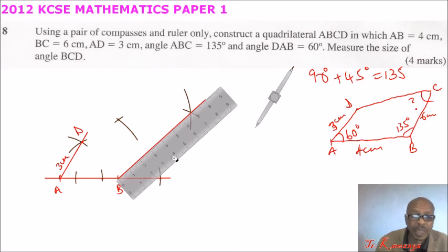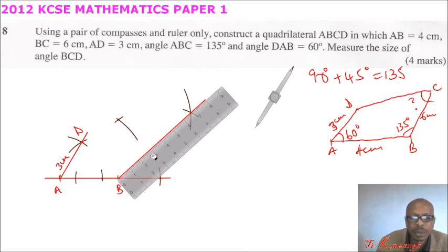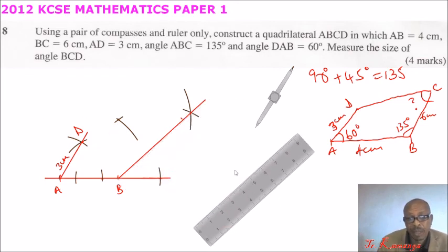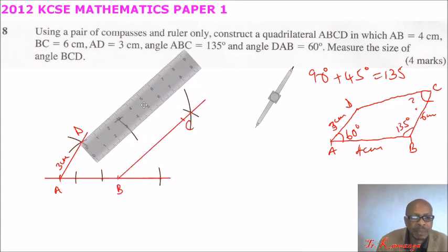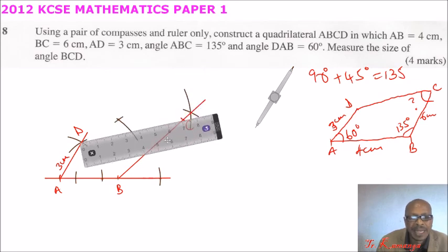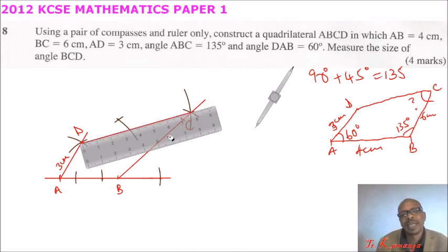Still on the same point B, we are told that this length BC is 6 cm. So we measure 6 cm: 1, 2, 3, 4, 5, 6. That is where we have our mark — that is the position of C. We have identified the position of C. Now, still using the same ruler, we join D and C to come up with line CD. That is how you get that figure.